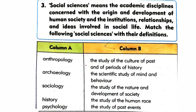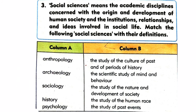Two columns are given here. Column A has the names of social science and column B has the definitions of these names. Just as science has its branches like biology, chemistry, and physics, social sciences also has five branches: number one is anthropology, number two is archaeology, number three is sociology, number four is history, and number five is psychology. Question number three says to match the following social sciences with their definitions.